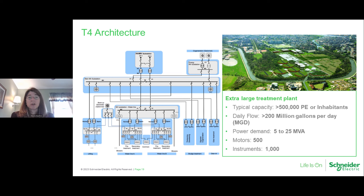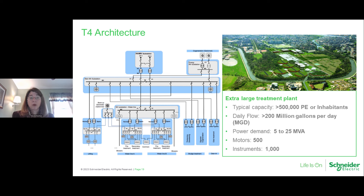T4 architecture has two associated designs. The first is an extra-large wastewater treatment plant, typically in urban areas — Dallas, Texas as an example — with 1.5 million inhabitants, a power demand of about 25 MVA, five medium-voltage motors, 800 low-voltage motors, and 1,000 instruments. In extra-large sites, medium-voltage is often designed in to support medium-voltage motors for blowers and aerators. This example shows a radial double-feed electrical architecture, which is simple and offers high power availability but is less suitable for expanding the site. Advantages include voltage regulation, increased reliability, loss reduction, and avoiding cable congestion while facilitating use of distributed generation.